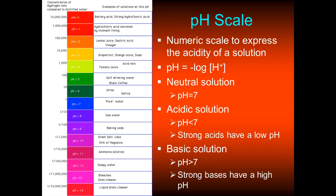The last thing to cover before leaving chemistry is the pH scale. This is a numeric scale from 0 to 14 that expresses how acidic or basic a solution is. The equation is: pH = −log[H⁺]. If pH equals exactly 7, it's a neutral solution — neither acidic nor basic. Anything less than 7, down to 0, is an acidic solution.